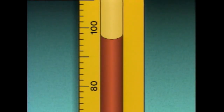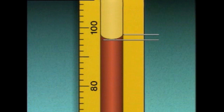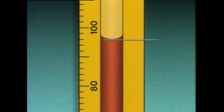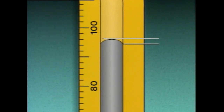The free surface of a column of liquid forms what is known as a meniscus. Water and oil both form a concave meniscus, which means that the center of the column is lower than the outer edges. The level of any meniscus should be read at its center, so the level of a concave meniscus is read at the lowest point. Mercury, on the other hand, forms a convex meniscus, which means that the center of the column is higher than the outer edges. So the level of a convex meniscus is read at the highest point.